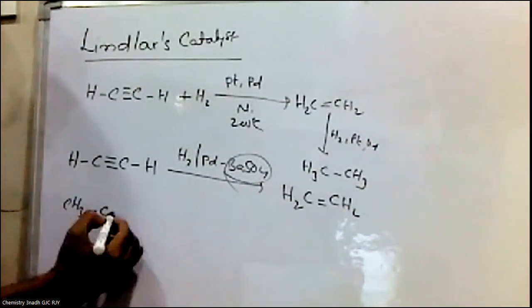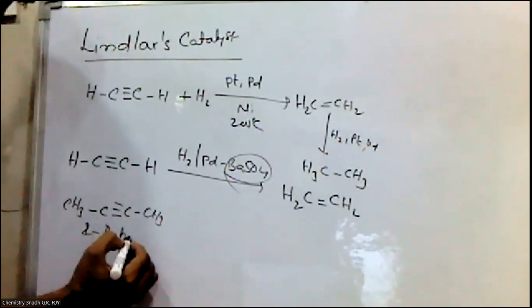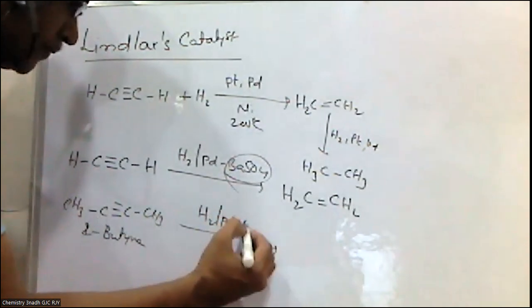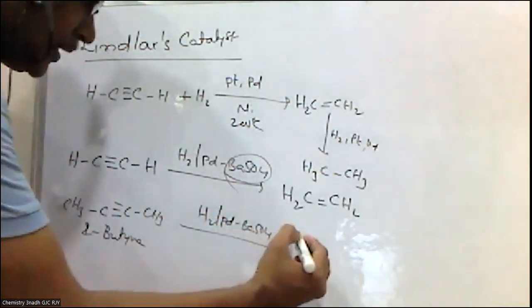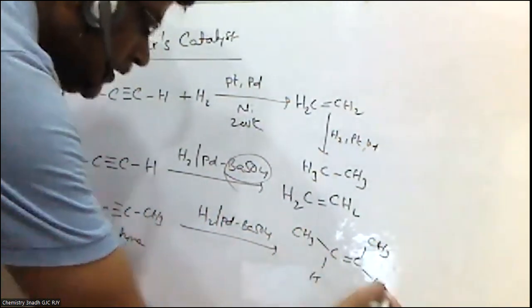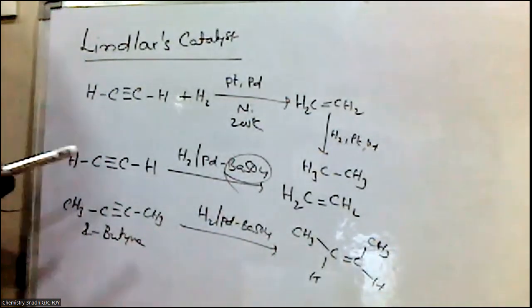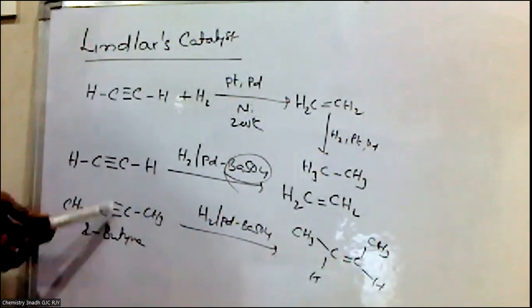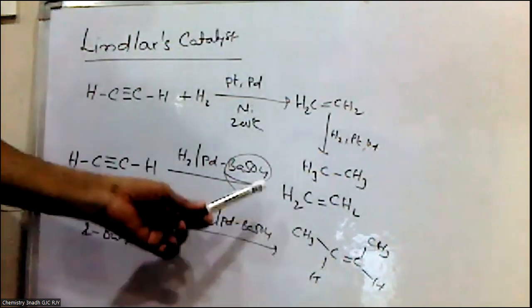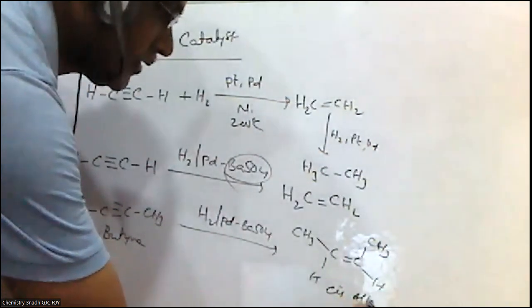For example, if you take CH3-C≡C-CH3, this is called 2-butyne. On hydrogenation with Lindlar's Catalyst, it forms a cis-alkene — specifically, cis-alkene is formed. When non-terminal alkynes undergo hydrogenation using Lindlar's Catalyst, cis-alkenes are formed.